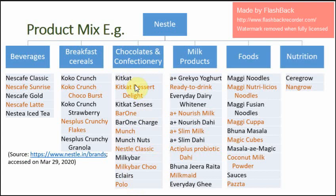Within the milk products line, Nestle again has some similar products. In terms of foods, Nestle has certain other products, and in the nutrition product line, Nestle has two types of products. Now let us understand the elements of product mix using this Nestle example.